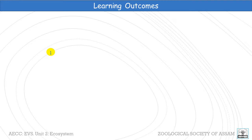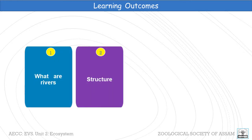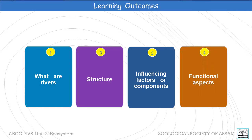Learning Outcomes. After going through the discussion, we will come to know about the following points: what are rivers or river ecosystem, structure of rivers and river ecosystem, influencing factors or components of river ecosystem, and functional aspects of river ecosystem. Now let us go for the whole discussion.